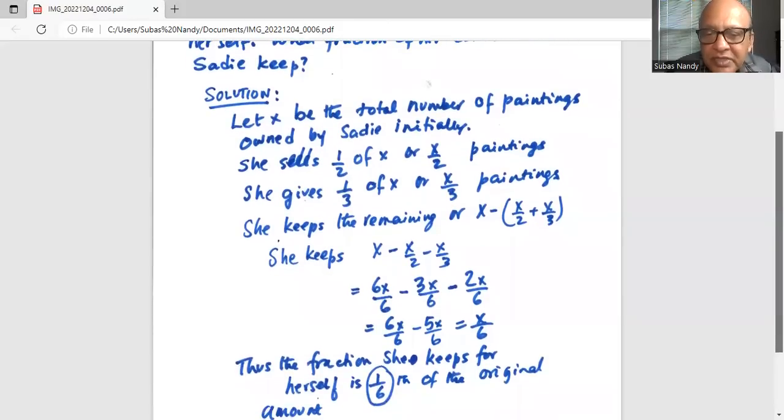Which is 6X minus 5X divided by 6, is X over 6 or one X over 6. We just do not write the one. It is X over 6.